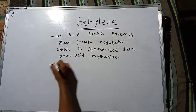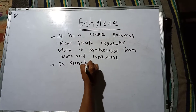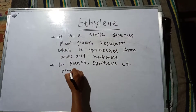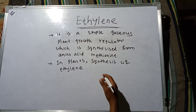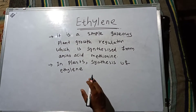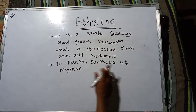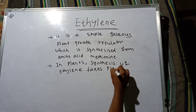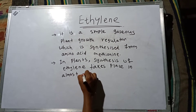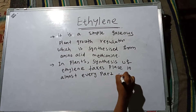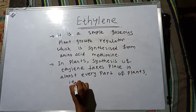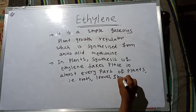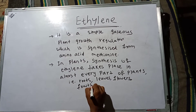In plants, synthesis of ethylene takes place in almost every part of the plant — that is roots, leaves, flowers, fruits, seeds, etc.